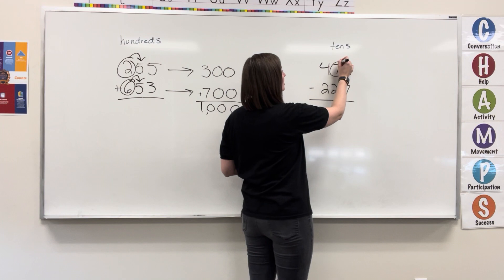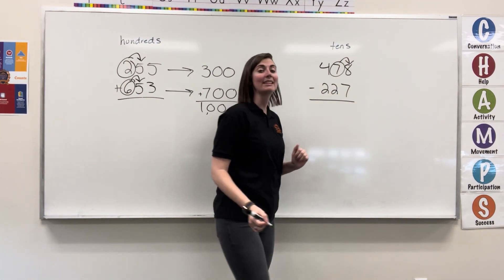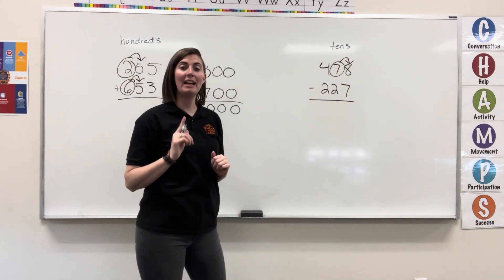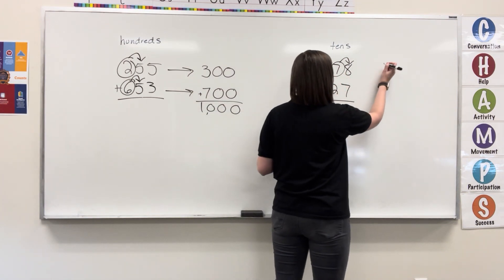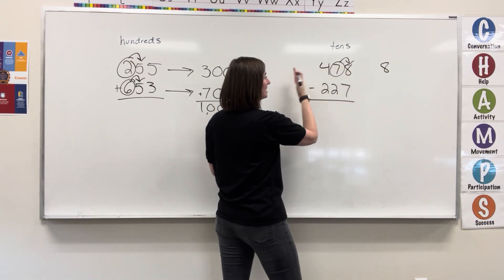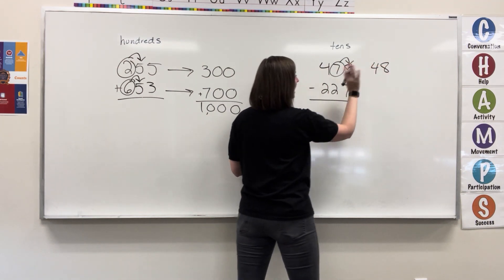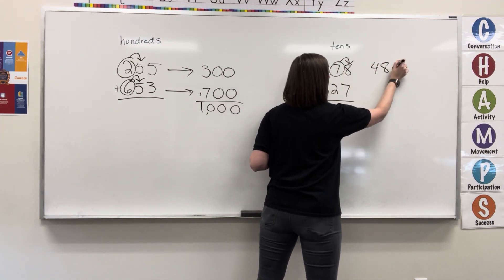When we round, we look to the right, four or less, let it rest. Five or more, let it soar. Eight is five or more. Seven is going to soar. Seven becomes an eight. Everything to the left stays the same. Everything to the right becomes a zero.